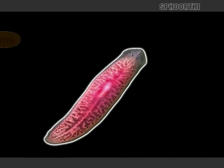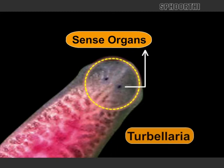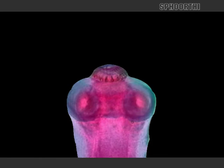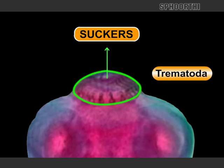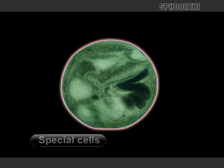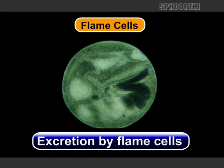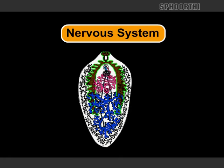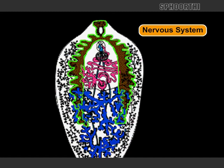Sense organs are present only in Turbellaria. Suckers are found in Trematoda. Digestive system is absent in Cestoda. Special cells called flame cells are present in the excretory system. A ladder-like nervous system is seen in these forms.